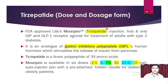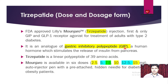FDA approves Lilly's Mounjaro, that is Tirzepatide — this is the generic name, this is the trade name, and this is the company that has developed it. It is an injection and the only GIP and GLP-1 receptor agonist for the treatment of adults with type 2 diabetes. Tirzepatide is an analog of gastric inhibitory polypeptide (GIP). This is the first mechanism that has been introduced in this drug.